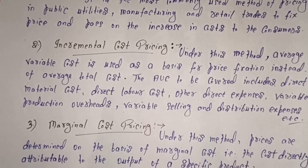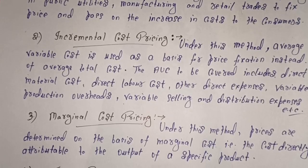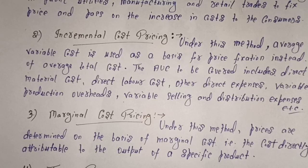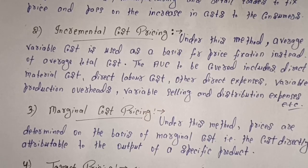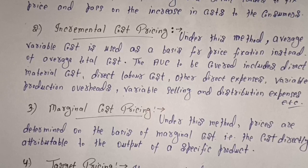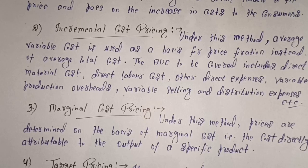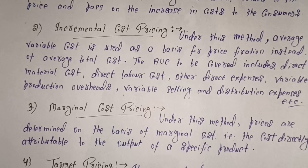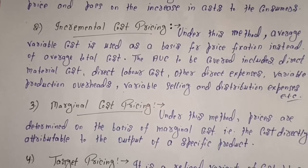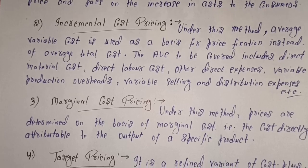Marginal cost pricing में prices को marginal cost के basis पर determine किया जाता है। Marginal cost का मतलब है cost directly attributable to the output of a specific product — यानि किसी particular specific product के output के regarding जो cost का direct contribution होता है। उस direct contribution के basis पर product का price decide किया जाता है, और उस marginal cost में एक percentage markup या absolute quantum add करके product का final price decide किया जाता है।